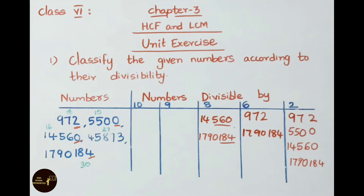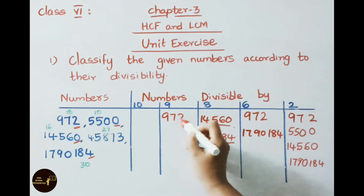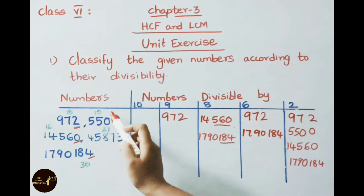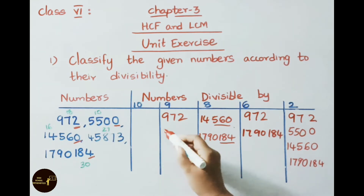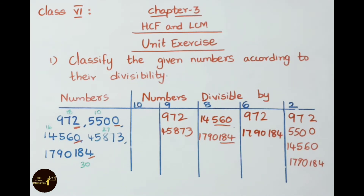Now let us check divisibility by 9. The sum of digits must be divisible by 9. For 972, the sum of digits is 18, so 972 is divisible by 9. For 5500, the sum is 10, and for 14560 it is 16 — these two are not divisible by 9. For 45873, the sum of digits is 27, so it is divisible by 9. For 1790184, the sum is 30, which is not divisible by 9. Therefore only 972 and 45873 are divisible by 9.